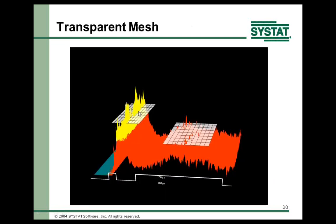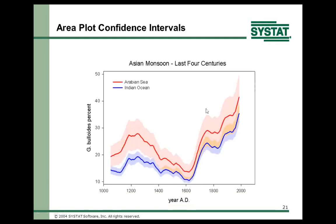You can see through meshes to meshes underneath. For area plots, this example was used because the researcher had so much data they didn't want individual error bars, which would look like a bad suture job. Instead they used an area plot around the red and blue lines to show the variability — that's another use of area plots.